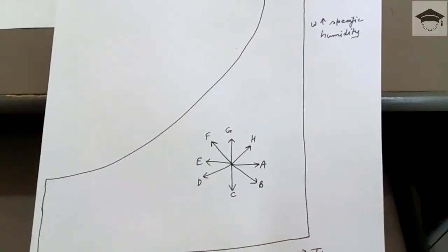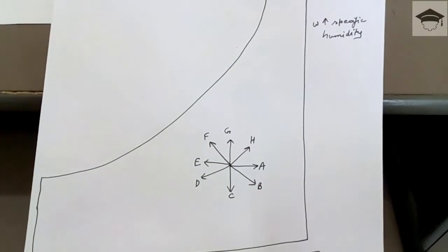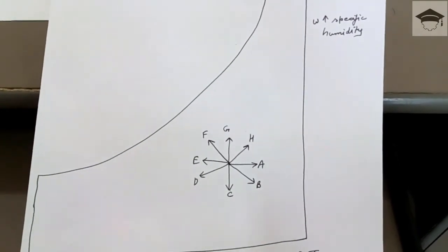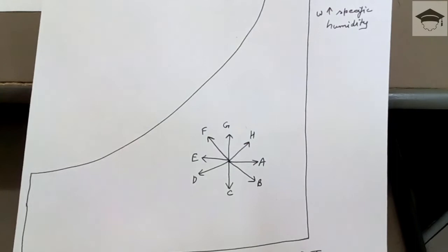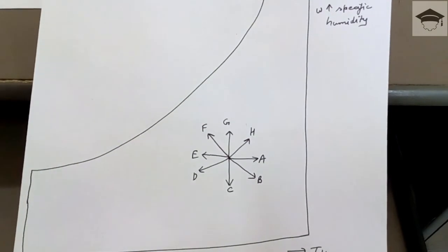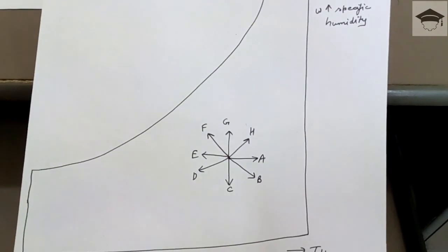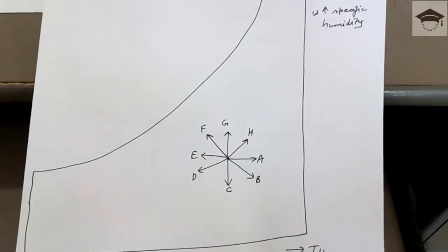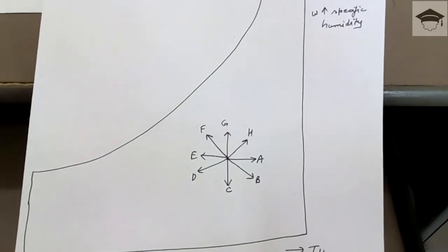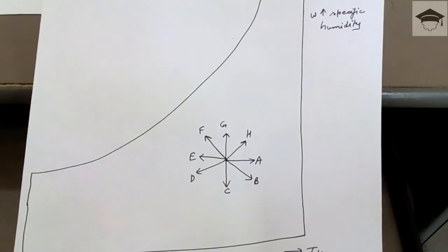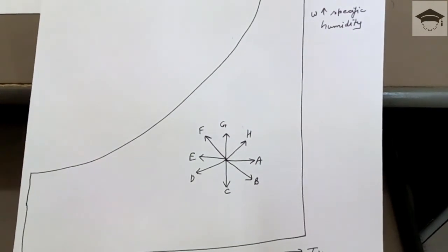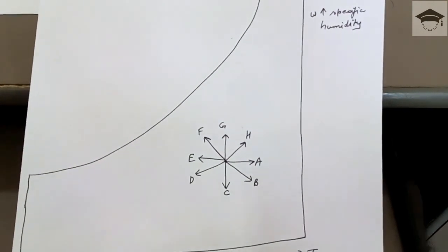So these are the eight processes represented on the psychrometric chart. The most important one is Process D — cooling with dehumidification — which is the basis for the main design of an air conditioning system.